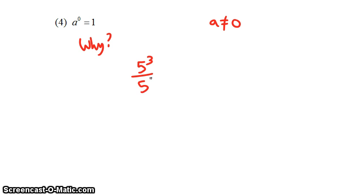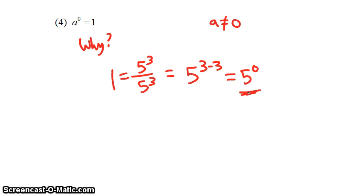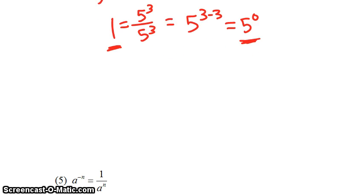Let's look at the example 5 cubed over 5 cubed. Of course, we know that's equal to 1 — anything divided by itself is going to be 1. But according to the previous rule, 5 cubed over 5 cubed is equal to 5 to the 3 minus 3, or 5 to the 0 power. So what we see is that 5 to the 0 power turns out to actually equal 1. That's one way to see why 5 to the 0 is 1.